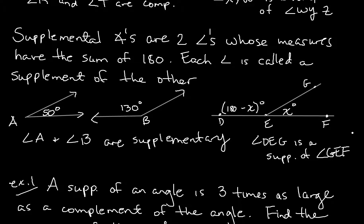Supplementary Angles are two angles whose measures have the sum of 180. Each angle is called a supplement of the other. Here we have an angle of 50 and one of 130, so Angle A and Angle B are supplementary. Here are two that are on the same line — Angle DEG is a supplement of Angle GEF. If we call the angle X, its supplement is 180 minus X. So if X is 80, the supplement is 100, and they add up to 180.